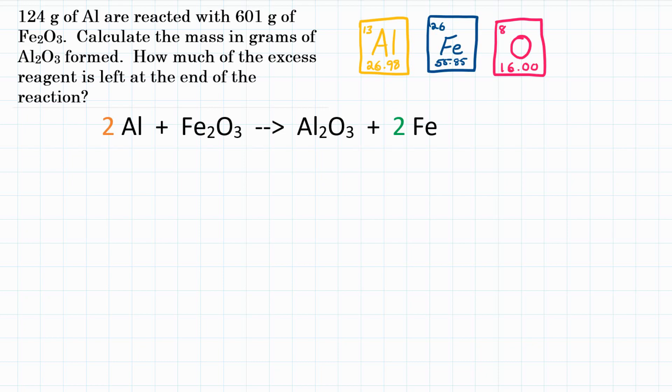124 grams of aluminum are reacted with 601 grams of Fe₂O₃. Calculate the mass in grams of Al₂O₃ formed. How much of the excess reactant is left at the end of the reaction?